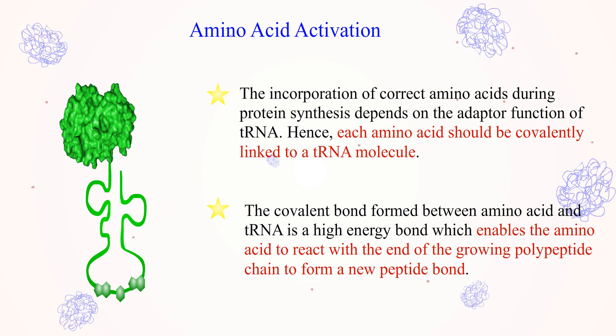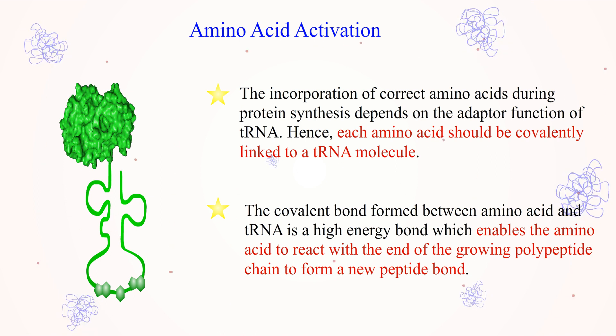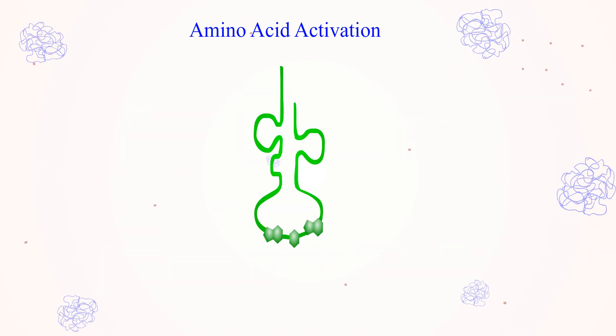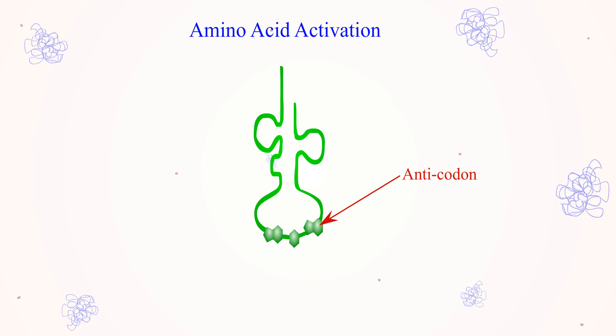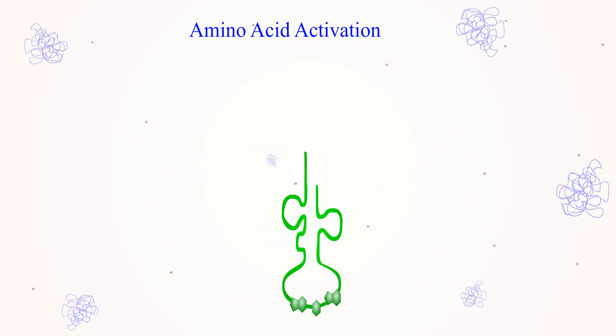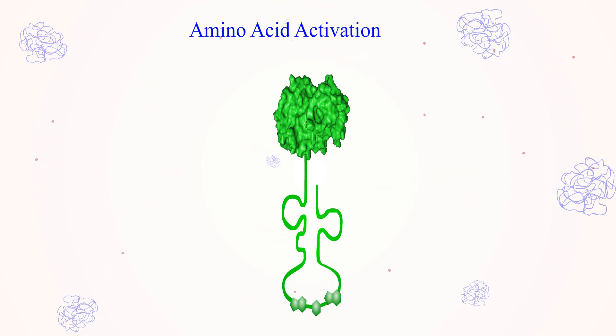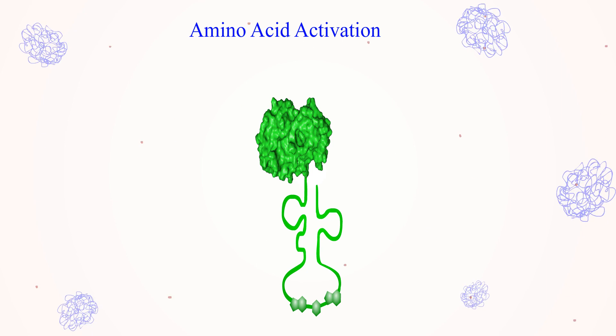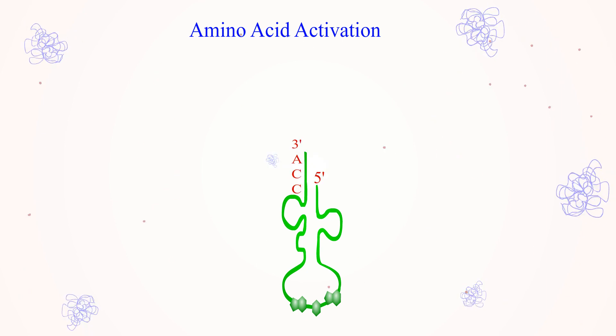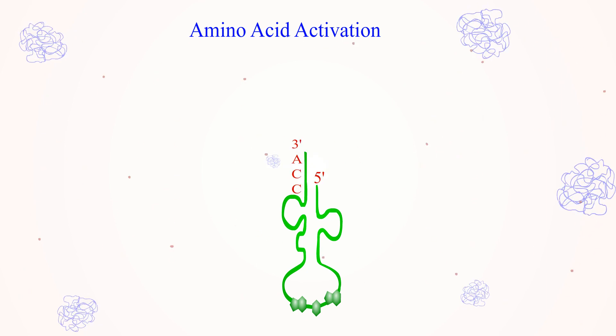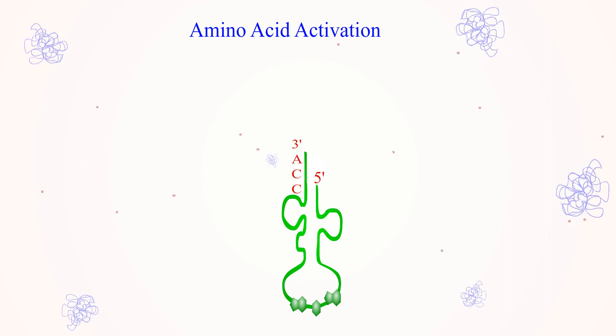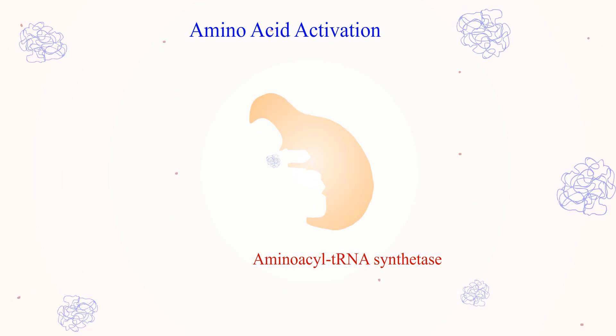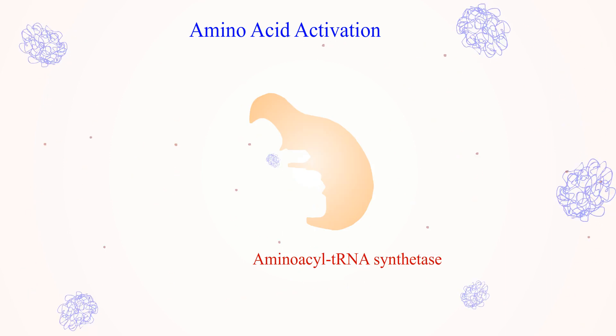The secondary structure of tRNA is in cloverleaf shape, with an anticodon accessible at the end of the anticodon stem loop. During synthesis of aminoacyl tRNA, the amino acid is covalently bound to the residue of the CCA sequence at its 3' end. The attachment of the amino acid to tRNA is catalyzed by the enzyme aminoacyl tRNA synthetase. Every amino acid contains a separate aminoacyl tRNA synthetase.